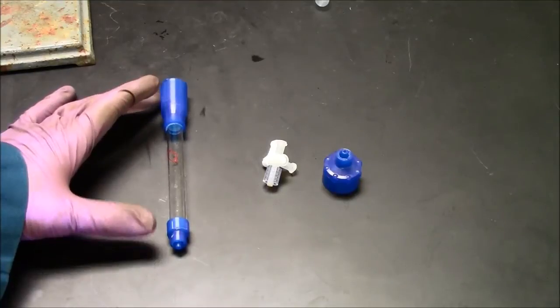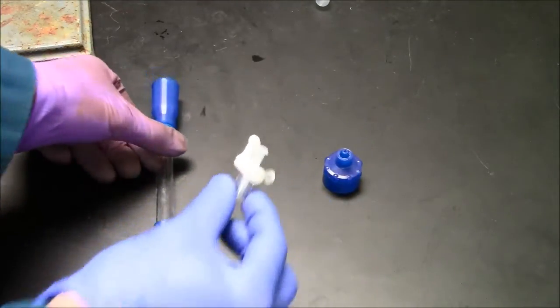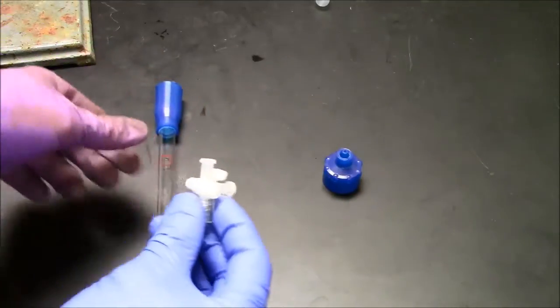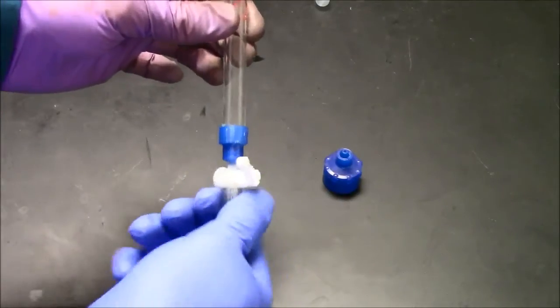This is a flex column, sometimes called an econo column. This is a stopcock. This has three positions. It will attach to the bottom of the column, screw tight.